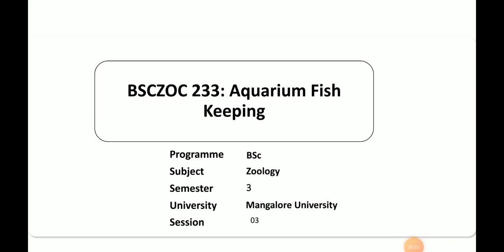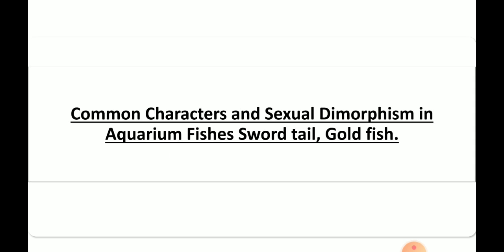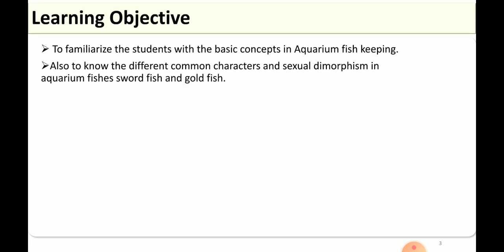Hello everyone. In this session we are going to discuss about the elective paper for second year B.Sc. students, that is aquarium fish keeping. In this session mainly we will be discussing about common characteristics and sexual dimorphism in aquarium fishes, that is sword tail and goldfish. The objectives are you will be having a broad idea of how fishes are kept, and also the different common characteristics and sexual dimorphism of aquarium fishes.